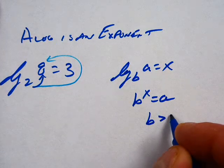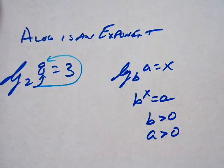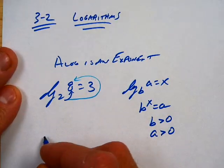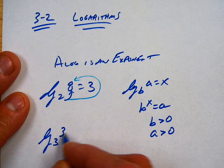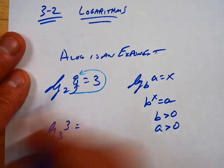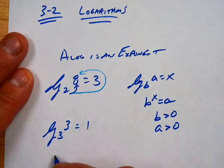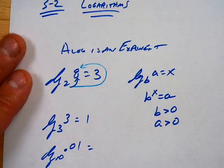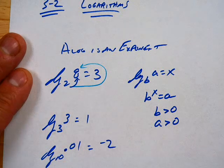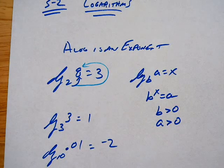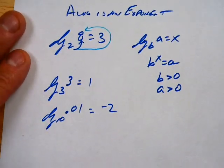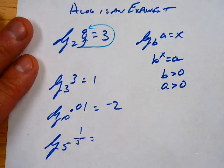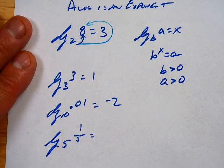And B is greater than 0. A is greater than 0. No negatives. Negatives aren't happening. So log base 3 of 3. 1. 3 to the first equals 3. Log base 10 of 0.01. Negative 2. Good. Because that's 1 over 100. Well, I've got to square it and I've got to flip it.